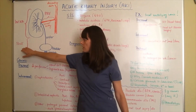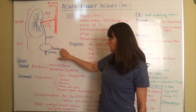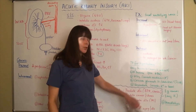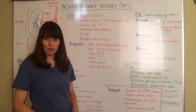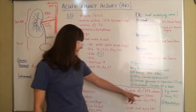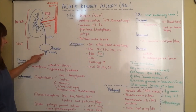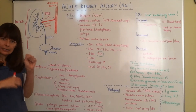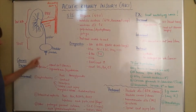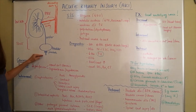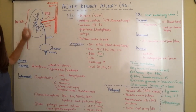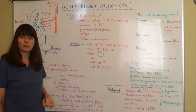Post-renal causes involve anything behind or after the kidney: the ureter, bladder, or prostate. Post-renal causes include prostate disorders such as BPH (benign prostatic hyperplasia), an enlarged prostate very common in aging men, as well as prostate cancer. If the prostate gets enlarged and clamps down on the urethra, the patient cannot excrete urine, which backs up into the bladder and then the kidney, causing the kidney to swell — hydronephrosis — impairing its ability to filter properly.